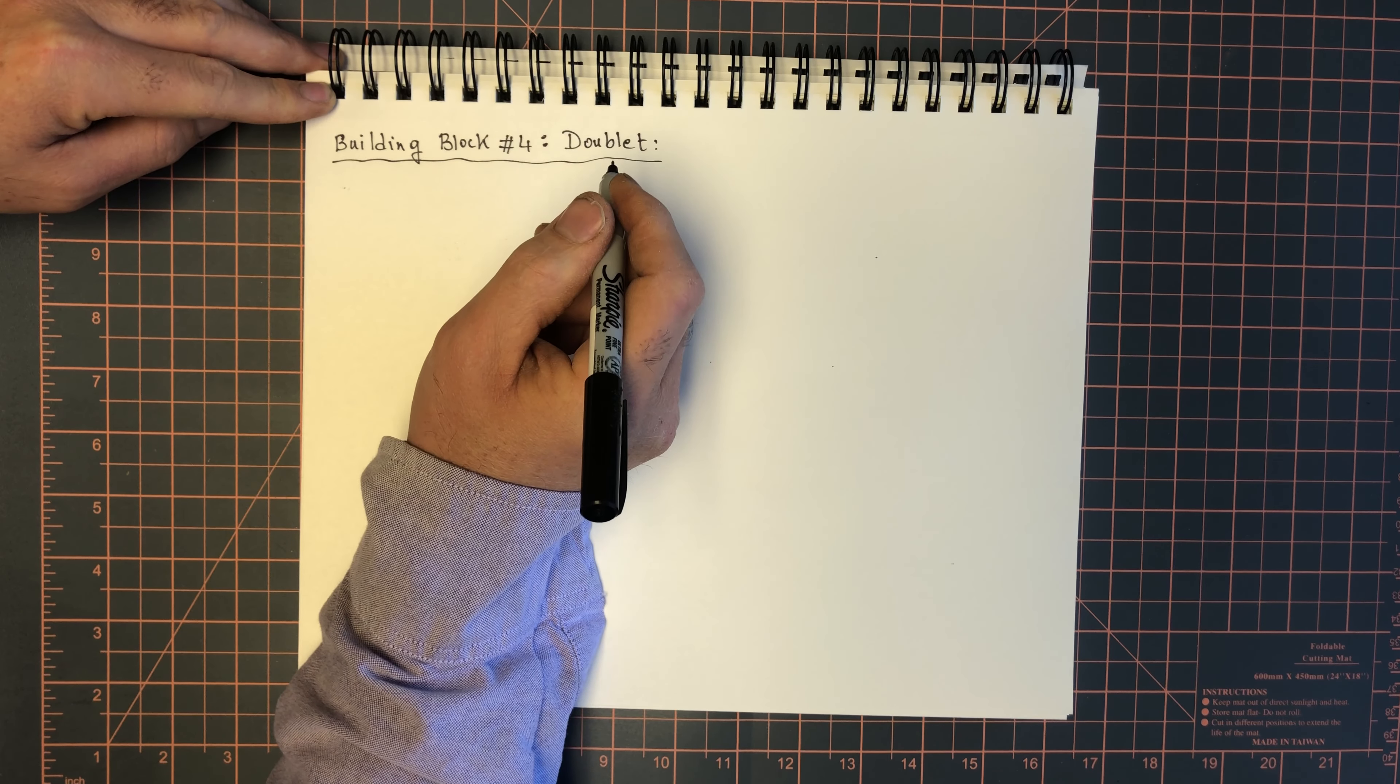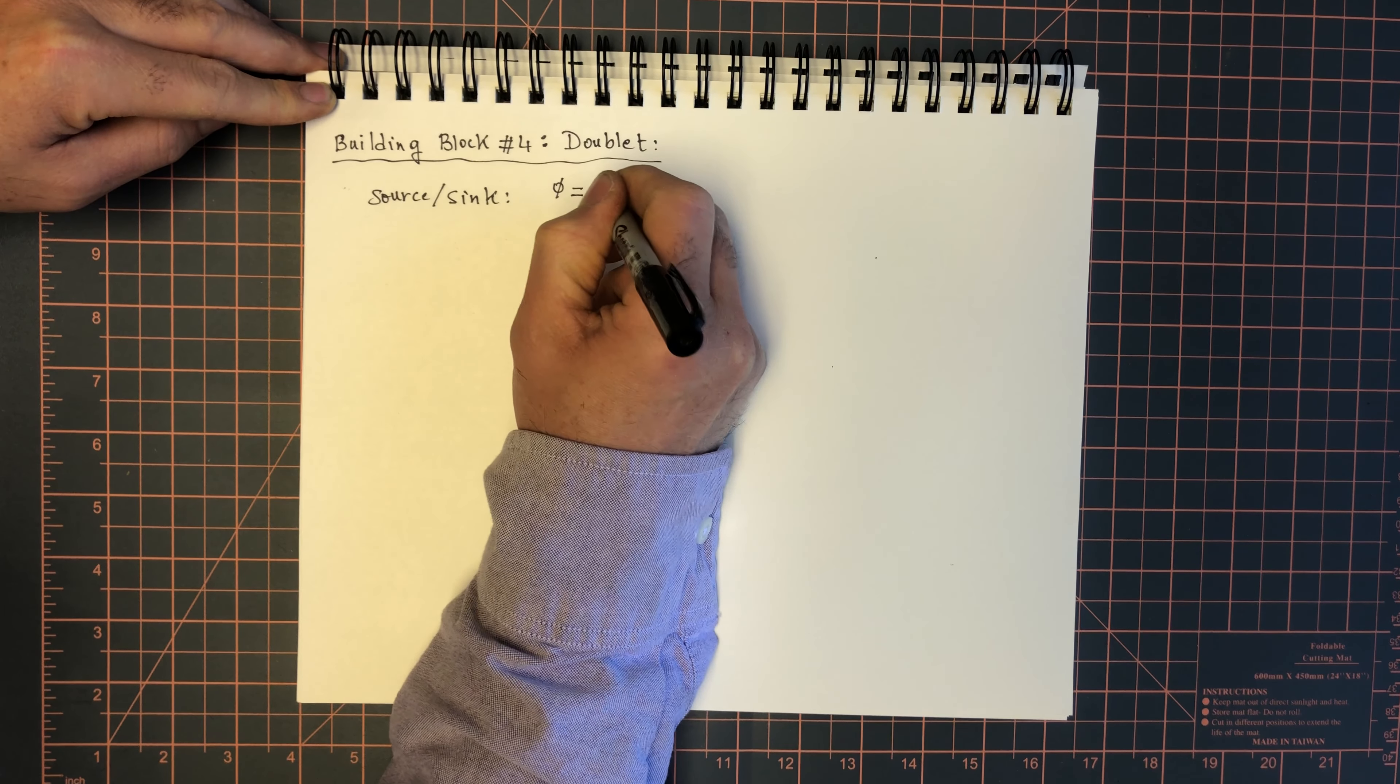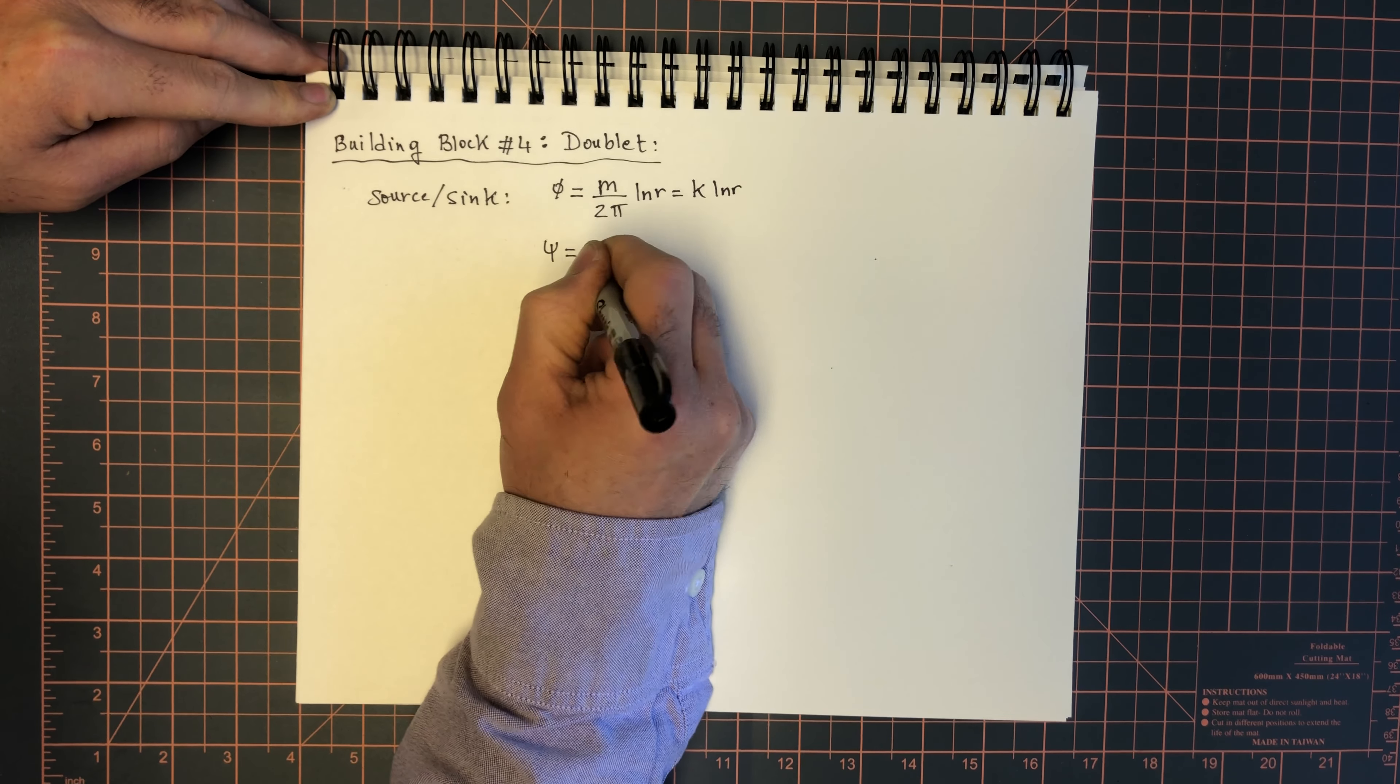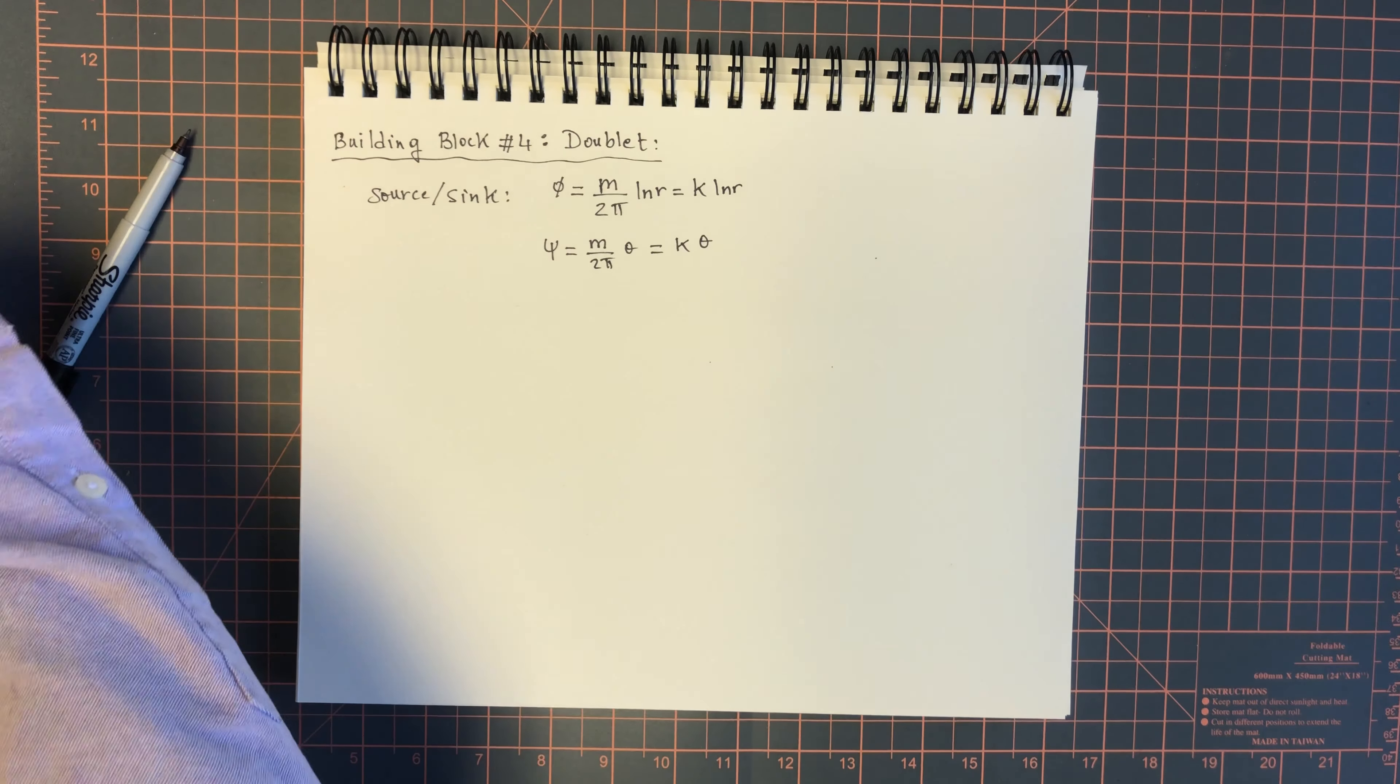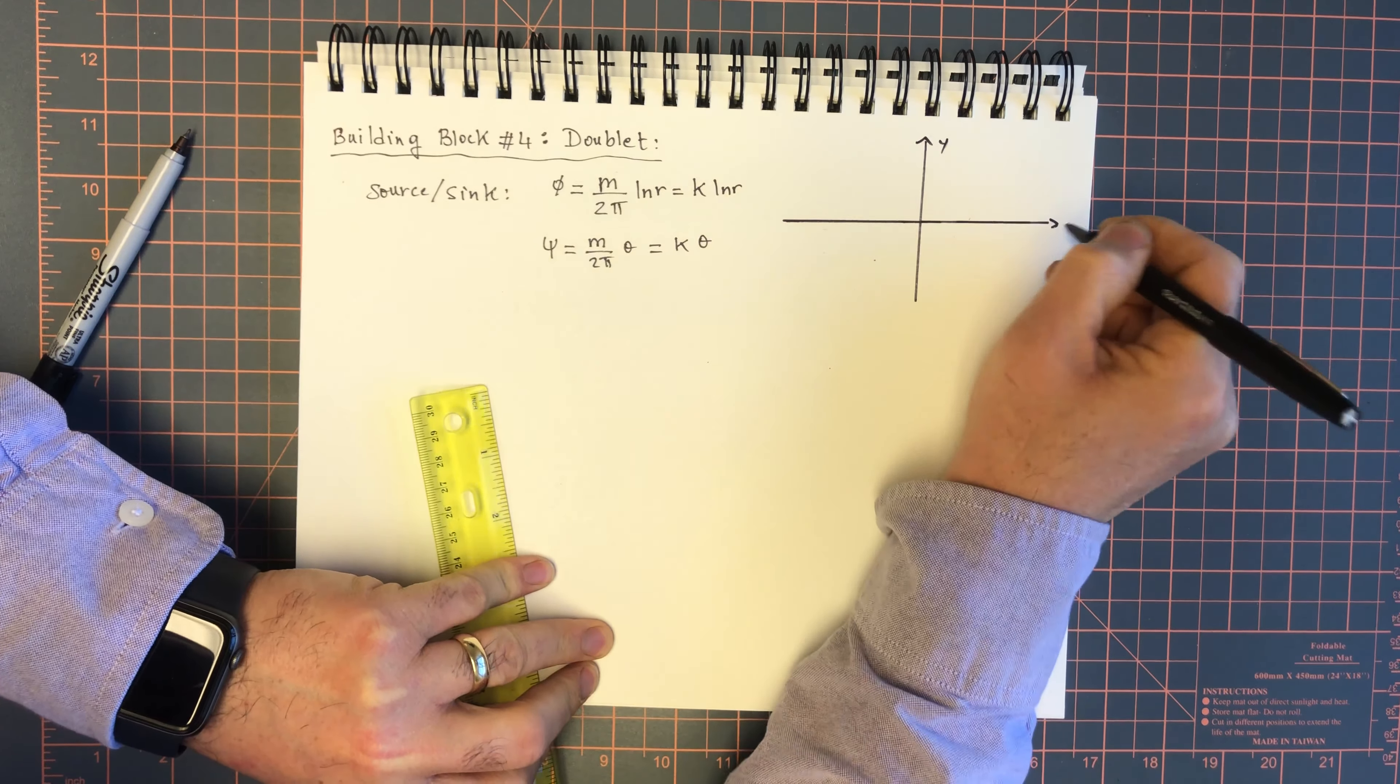Remember the sink and source was given by phi is equal to m over 2 pi log r. We're going to call this k log r and psi was given by m over 2 pi theta. Let's call this k theta. What we're going to do here is we're going to place a source and a sink. I'll assume the value of k is a positive quantity so that we can do a sink as well.